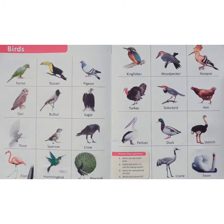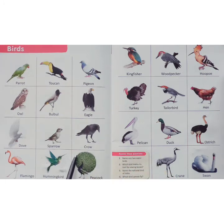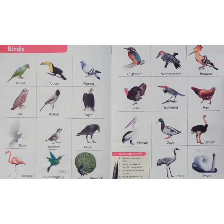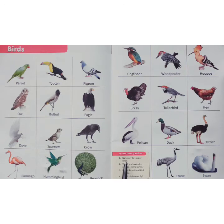So students, these are the birds. Now let's have some questions. Name any two water birds. The swan and the duck are water birds.